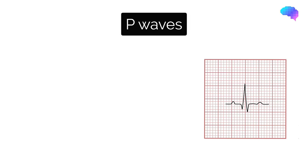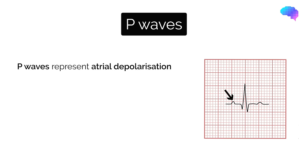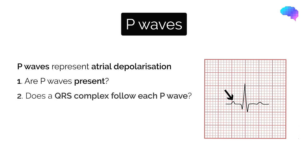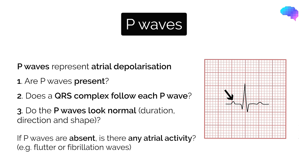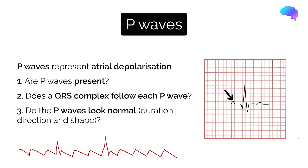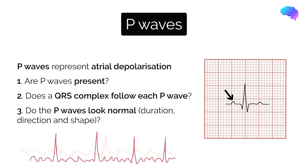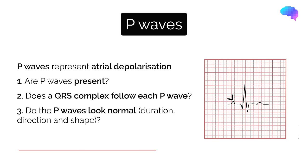The next step in our ECG interpretation process is to look at the P waves, which represent atrial depolarisation. We need to ask the following questions: are P waves present? If so, is each P wave followed by a QRS complex? Do the P waves look normal — check the duration, direction and shape. Finally, if P waves are absent, is there any atrial activity? A sawtooth baseline represents flutter waves, a chaotic baseline represents fibrillation waves, and a flat line represents no atrial activity at all.